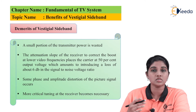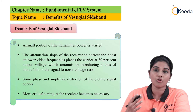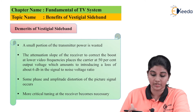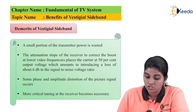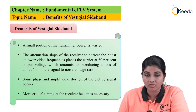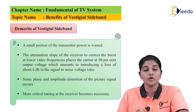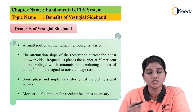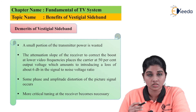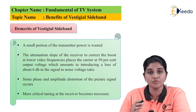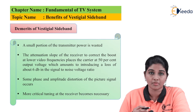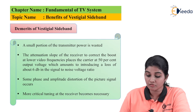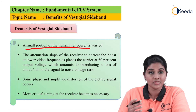Now let's discuss some demerits of the vestigial sideband. A small portion of transmitted power is wasted because the vestigial sideband filters used in the TV system remove the lower sidebands, and because of that a small portion of the power is wasted.